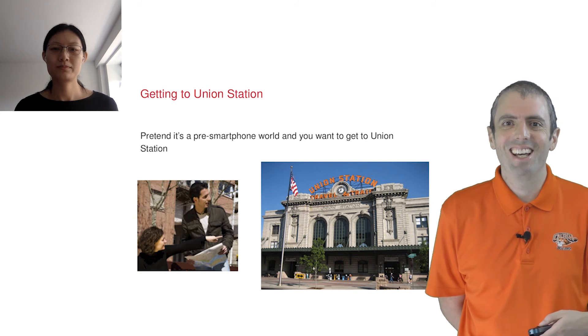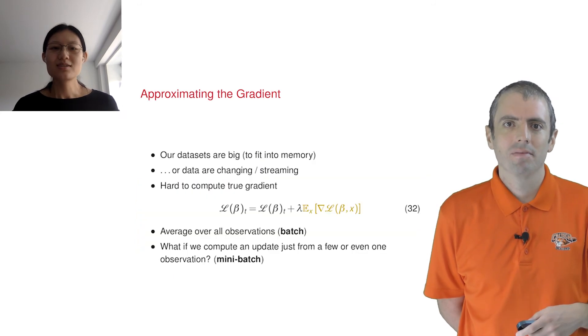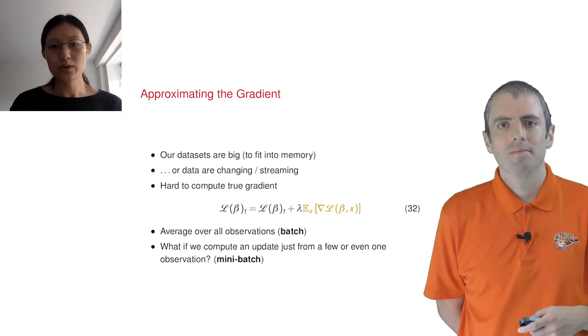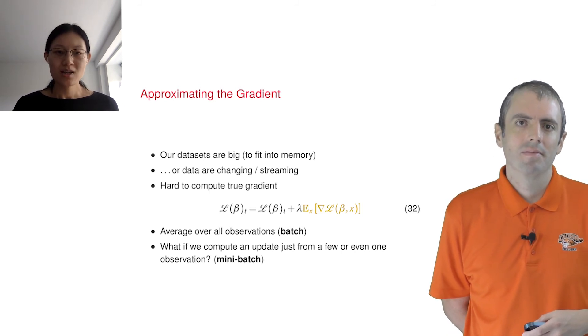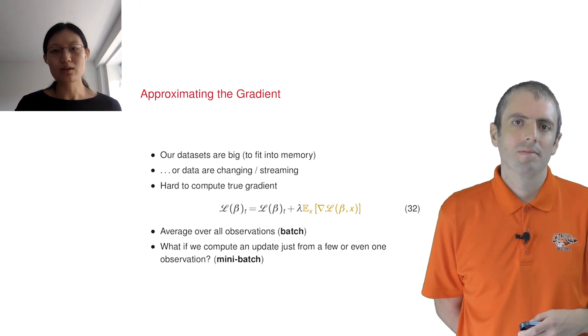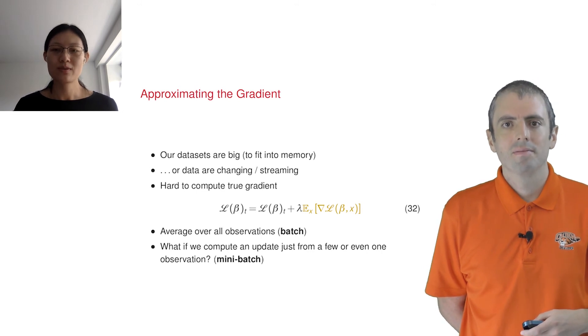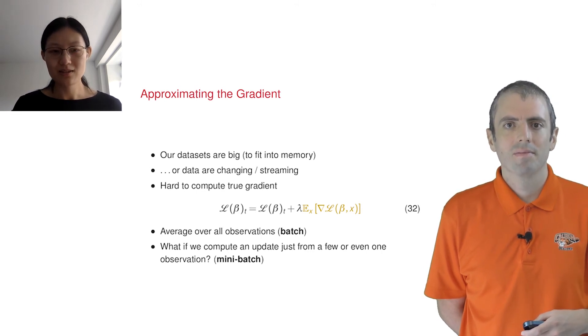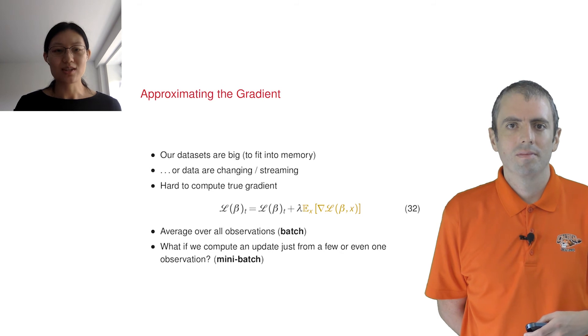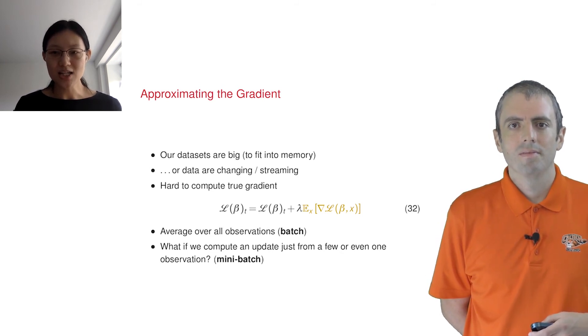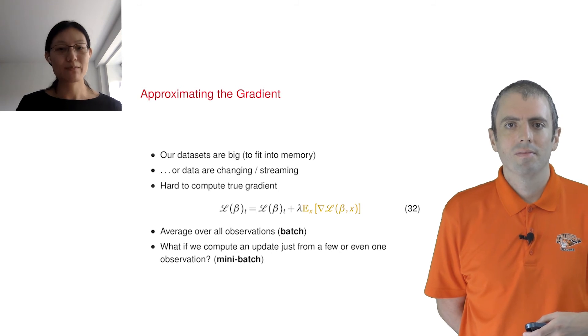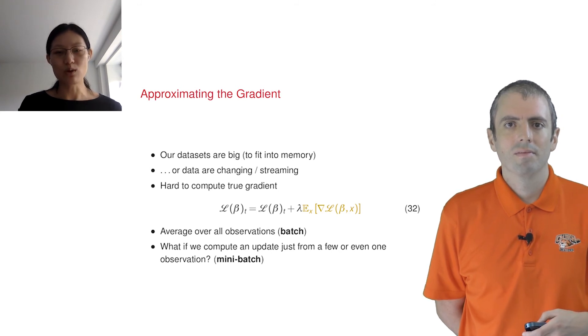Okay, so how many data points do we take estimates from? The set of examples that we use to compute the gradient is typically called a mini-batch. This is in contrast to computing the gradient over all examples, which is called a batch update. Setting this is finicky, just like setting the learning rate. But for ease of explanation, we'll just use a single example, and thus a mini-batch size of 1.